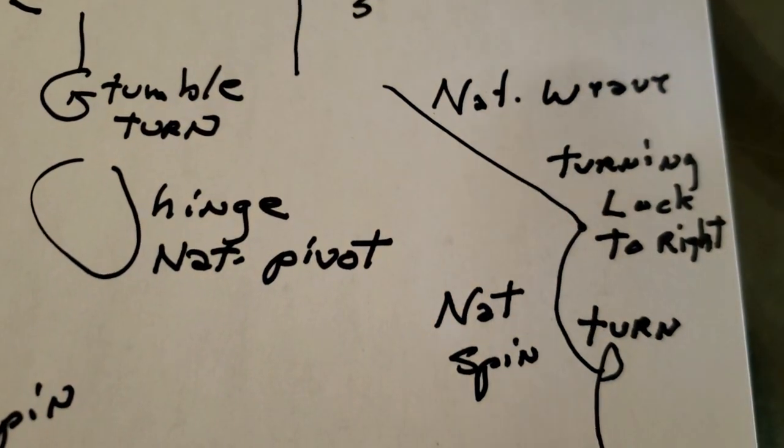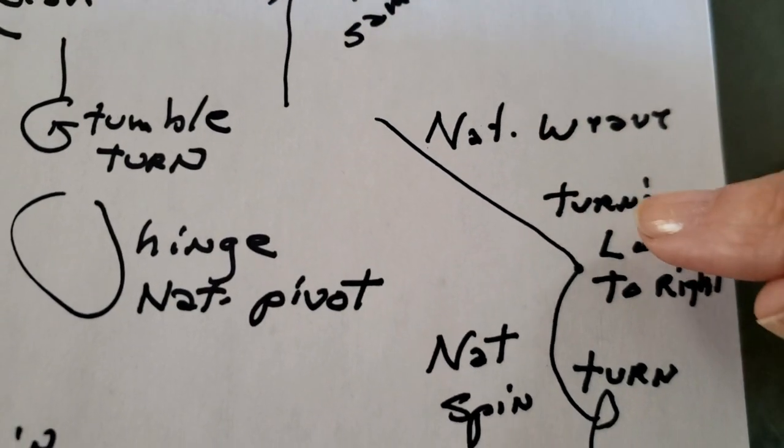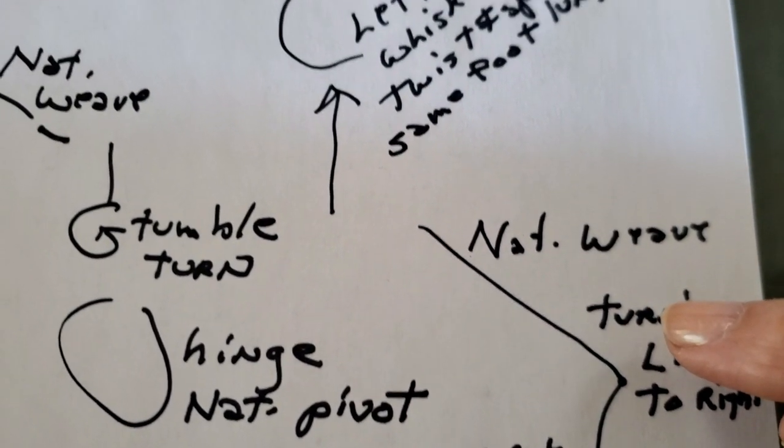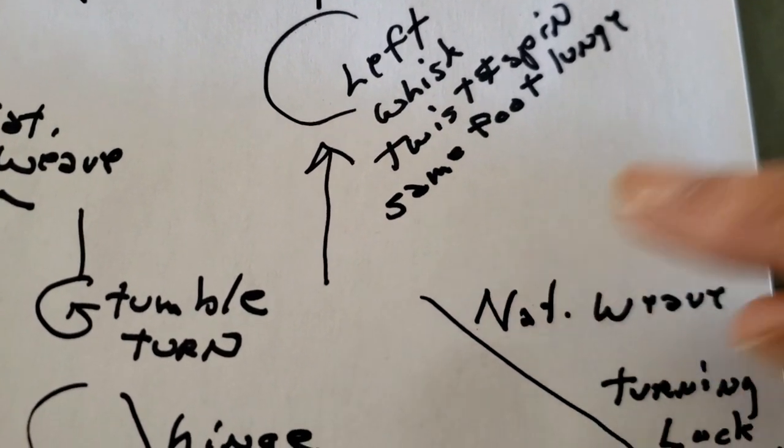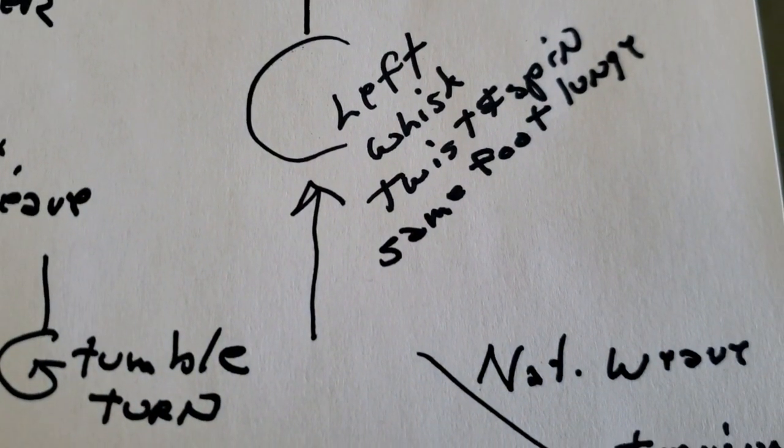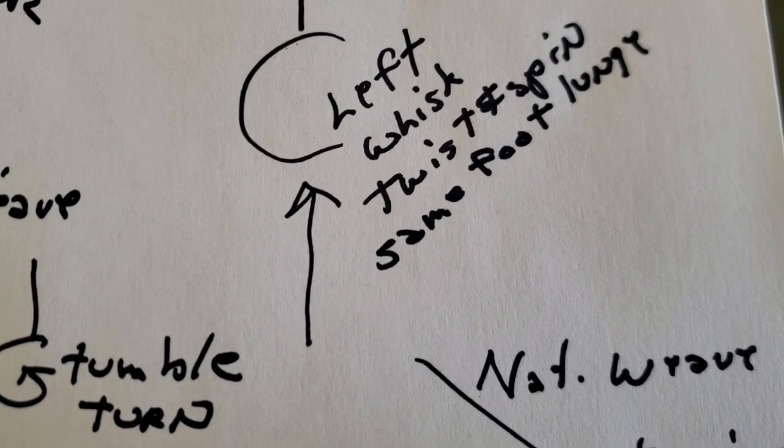So now you're going diagonal to center with your natural weave or running weave—they're the same figure. Then from there you're going backwards into the left whisk. We can enter left whisk from promenade or from close, so we're going backward and closed.